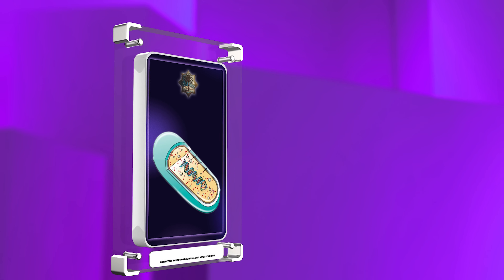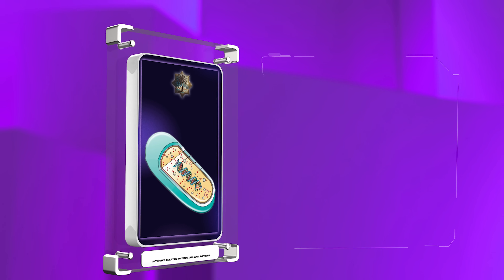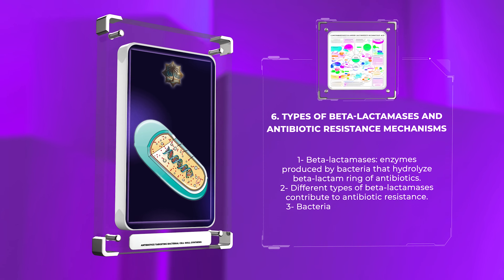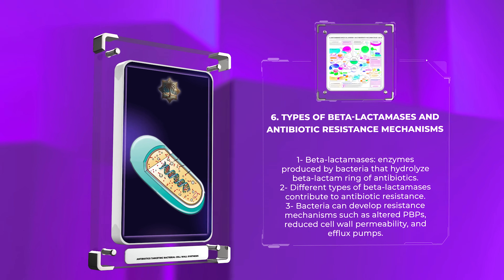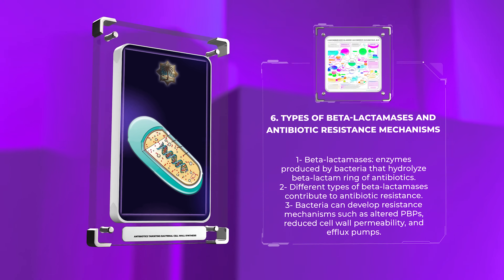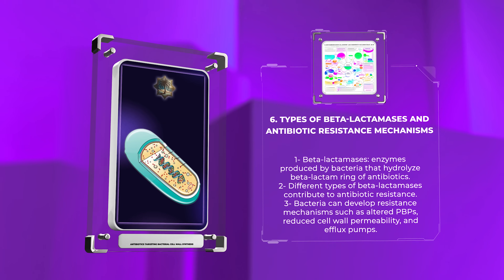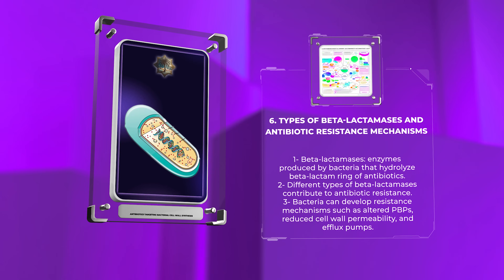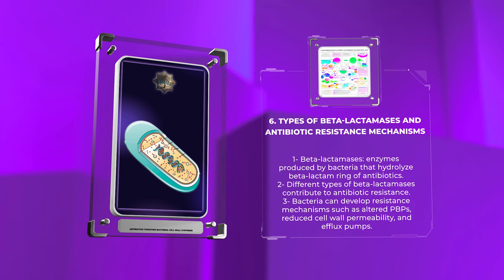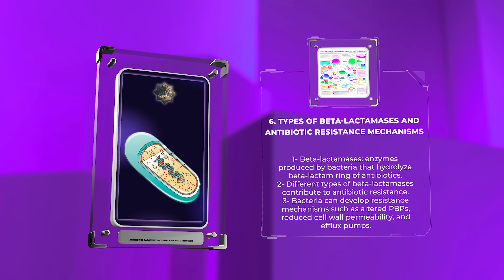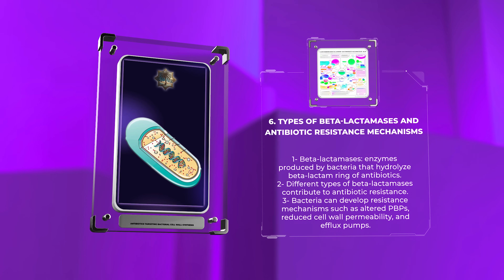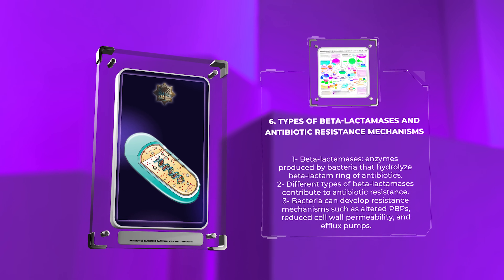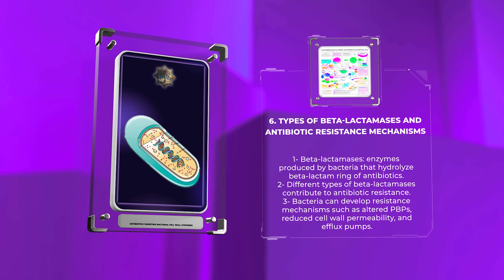Beta-lactamases are enzymes produced by bacteria that hydrolyze the beta-lactam ring of antibiotics, rendering them inactive. Bacteria may produce various types of beta-lactamases, such as narrow-spectrum, extended-spectrum, and carbapenemases, contributing to antibiotic resistance.